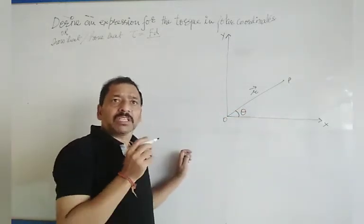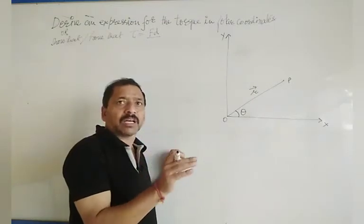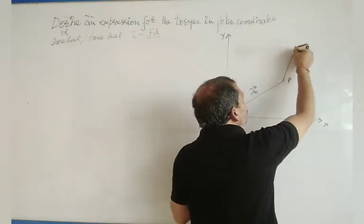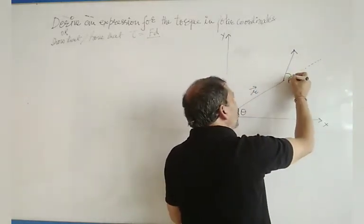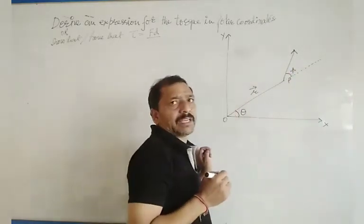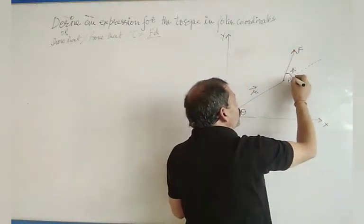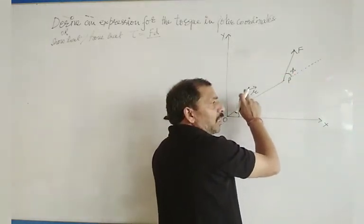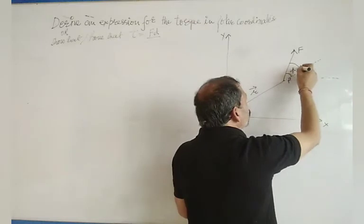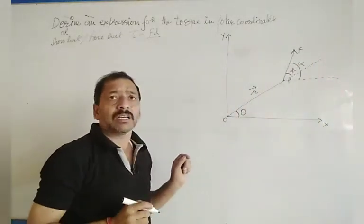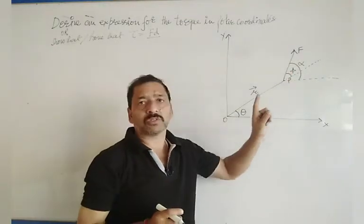Now, what do we do? We put a force on this particle. Suppose that we put a force in this direction. And if we put a force on it, it makes an angle with the direction of the position vector.